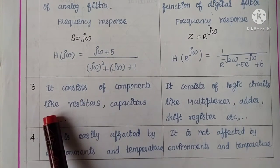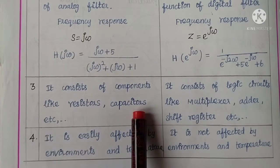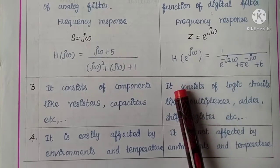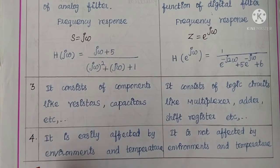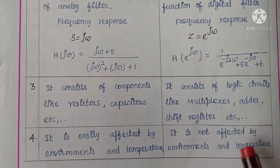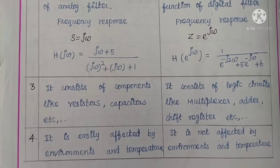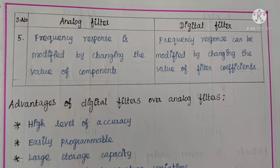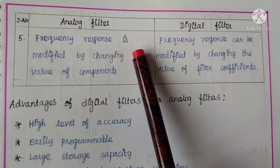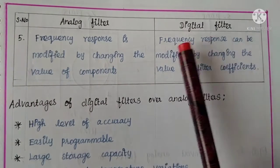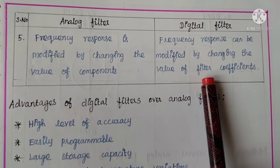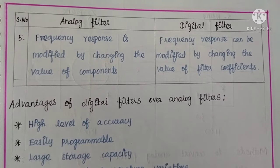The third point is: analog filter consists of components like resistors and capacitors, while digital filter consists of logic circuits like multipliers, adders, and shift registers. The fourth point is: analog filter is easily affected by environment and temperature, while digital filter is not affected by environment and temperature. The fifth point is: frequency response of analog filter is modified by changing the value of components, while in digital filter it is modified by changing the value of filter coefficients.